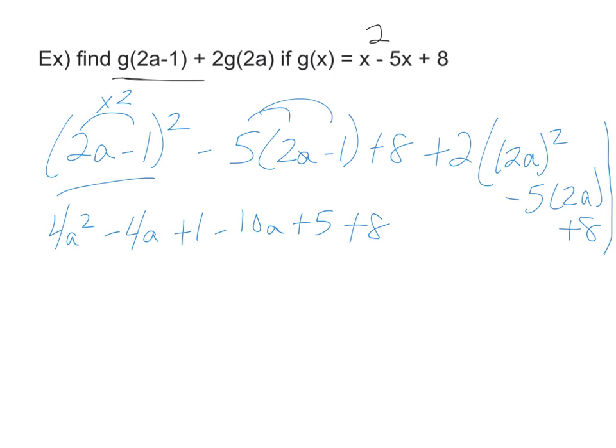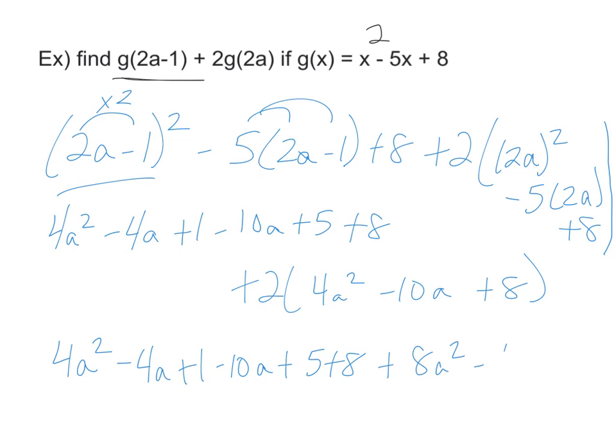Now I'm going to have to do the inside of this. I will have plus 2 times 2a squared is 4a squared minus 10a plus 8. So I can obviously distribute through that. I'm going to keep my first part the same. Plus 8a squared minus 20a plus 16.